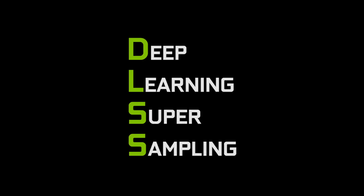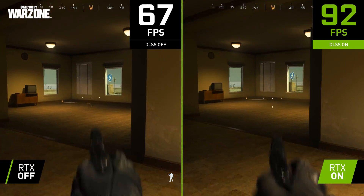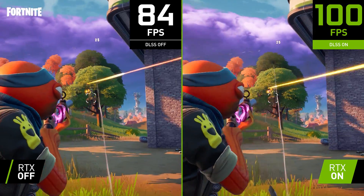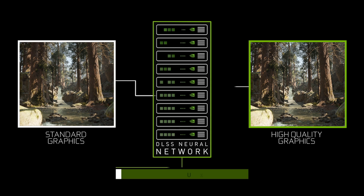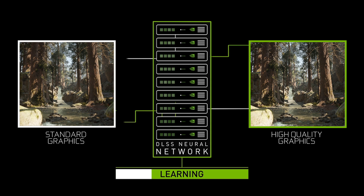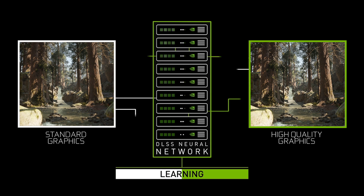DLSS stands for Deep Learning Super Sampling and it's a technology that uses AI to render your video games faster and more beautifully. For every frame of the video game you play, DLSS is running a neural network to reconstruct all of the detail and all of the beauty of the game, but at a much faster frame rate.